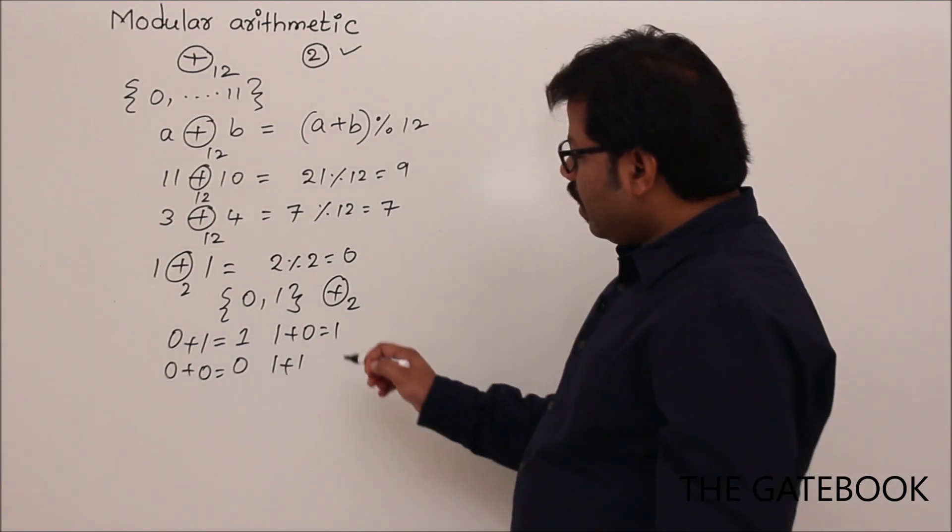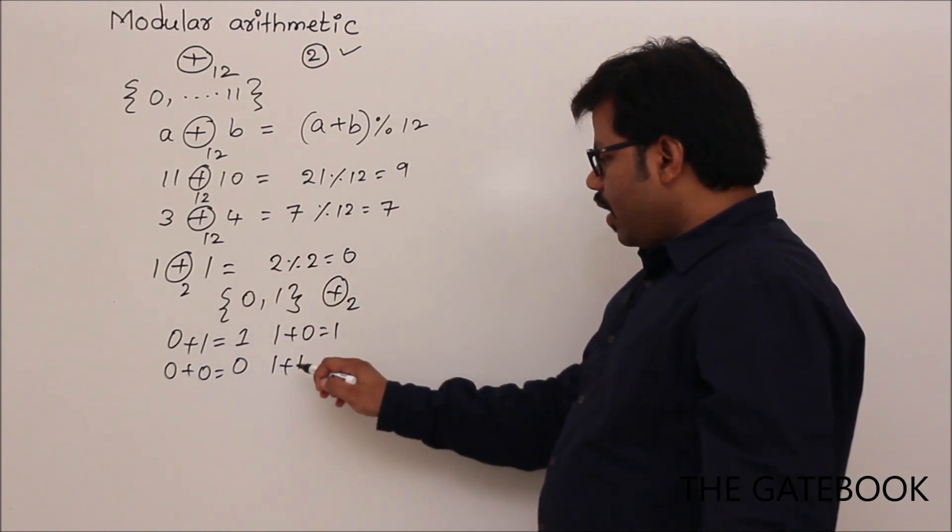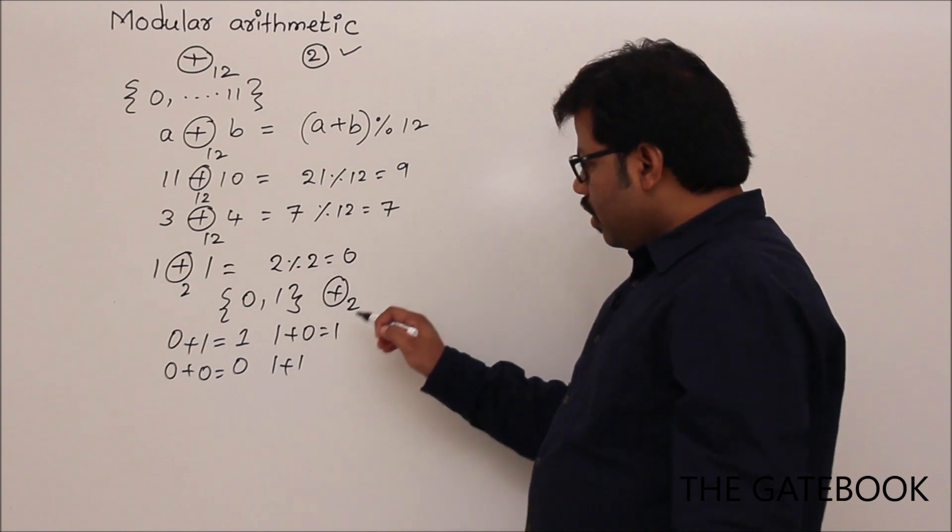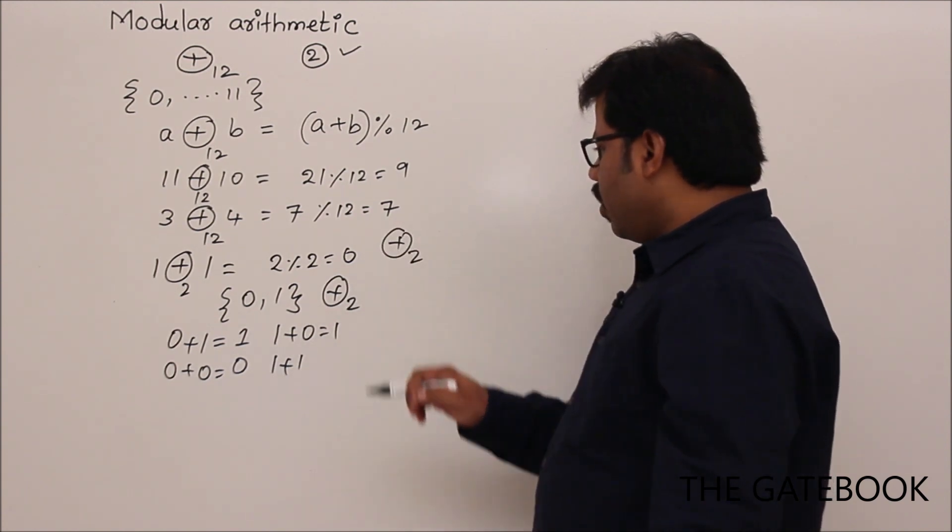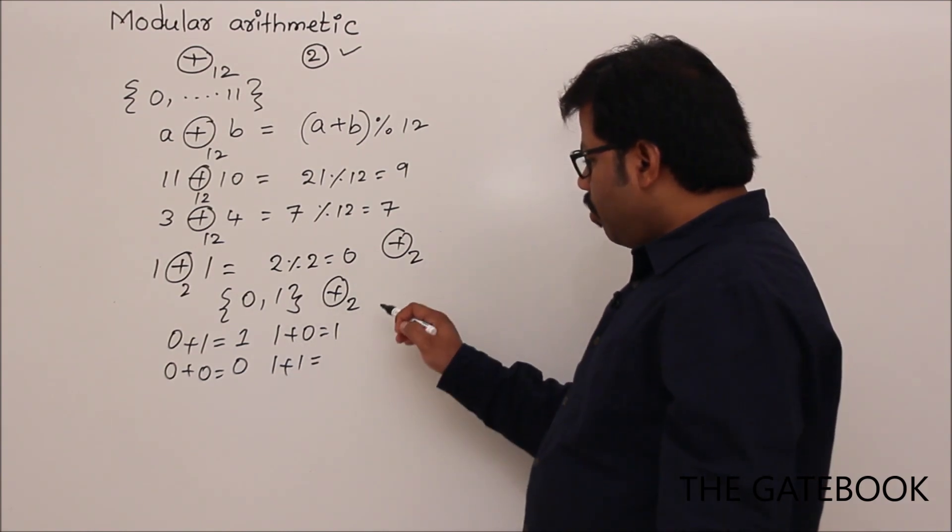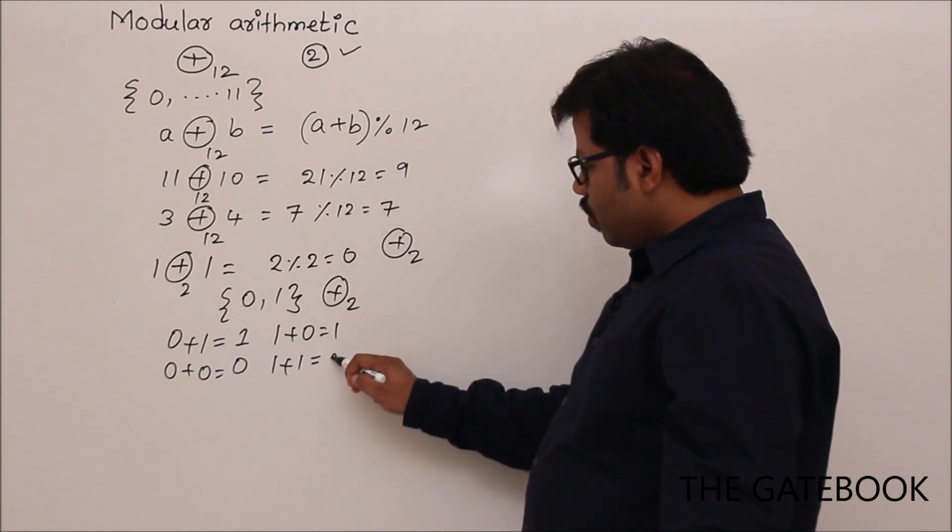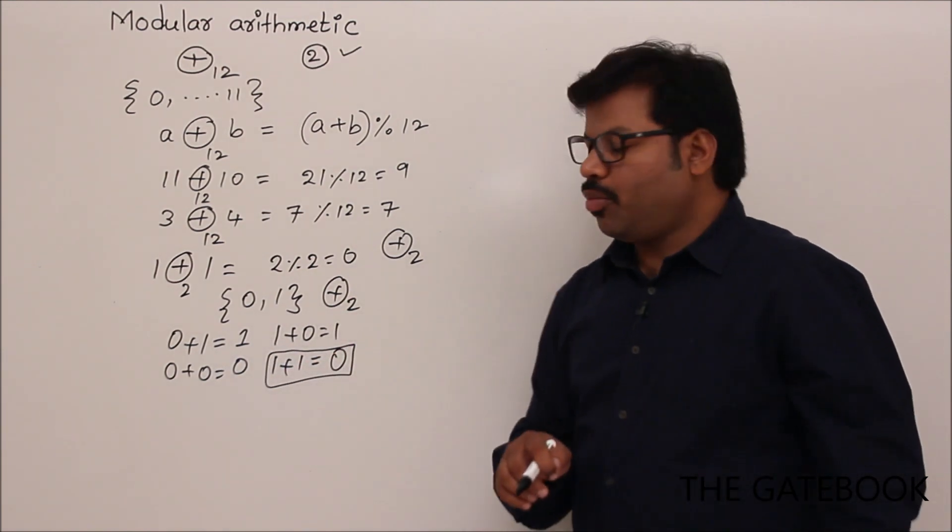So 1 plus 1. So 1 plus 1 is actually 2, normal addition, but the number should always fall into this category. So 1 plus 1, so though I am writing plus 1, my intention is arithmetic modulo base 2. So 1 plus 1 arithmetic modulo base 2 equal to 1 plus 1, 2, 2 percentile 2, 0. So this is the only where you see the difference. This is about addition.